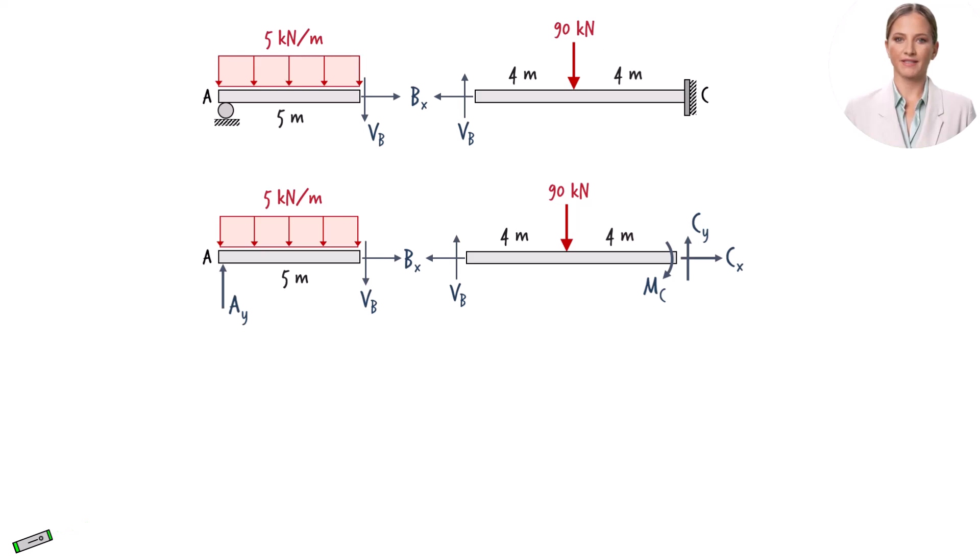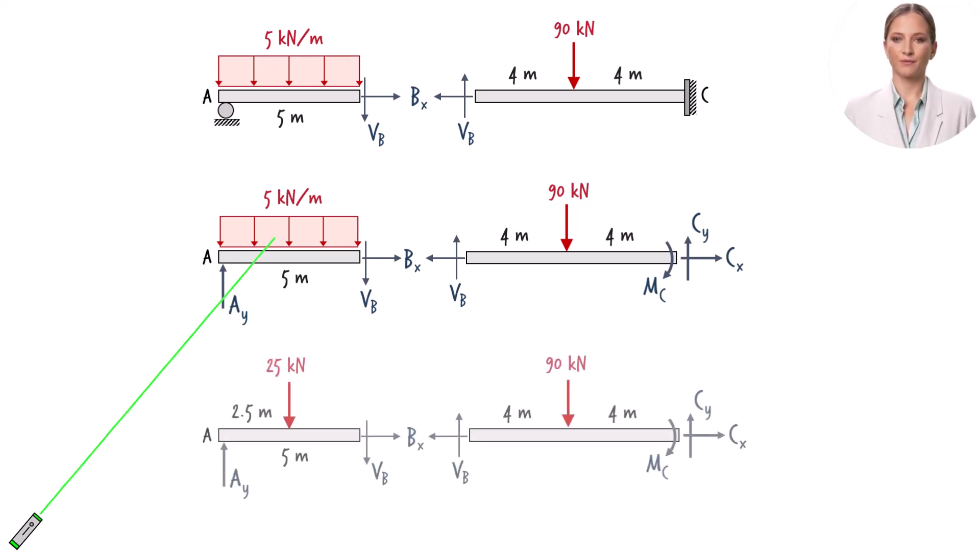To facilitate writing the equilibrium equations, we can replace the distributed load with its equivalent concentrated load. Since the area of this rectangle is 25, we replace it with a point load of 25 kN. The load is placed on the beam at the geometric center of the rectangle.